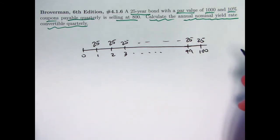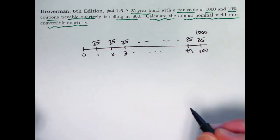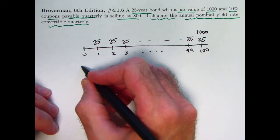Then you've got the redemption value. They don't say specifically, but the assumption is that it's the same as the par value—1,000 at the end. You've got your 800 payment at the beginning, which is the price of the bond.